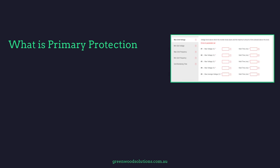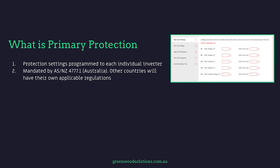So let's have a look at primary protection. These are the protection settings programmed to each individual inverter — max voltage, hold time, etc. It's mandated by AS 4777.1. Australia, New Zealand and other countries will have their own applicable regulations. And settings may vary from each DNSP — distribution network service provider — so make sure that when you're dealing with your specific DNSP that you have all the correct settings.